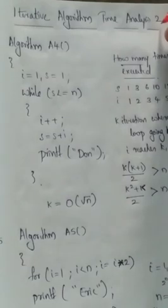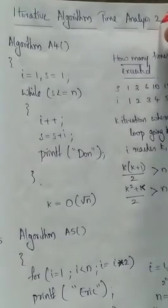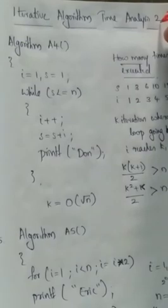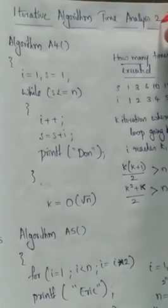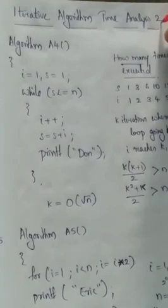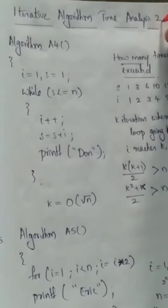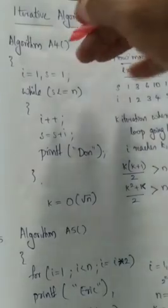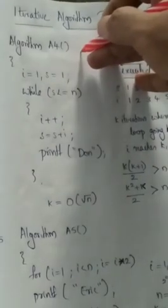Now we are going to discuss the algorithm for time analysis. That is part 2. We have already discussed the algorithm for loop statement. We are going to discuss the other version — the algorithm for time analysis. The algorithm is A4.